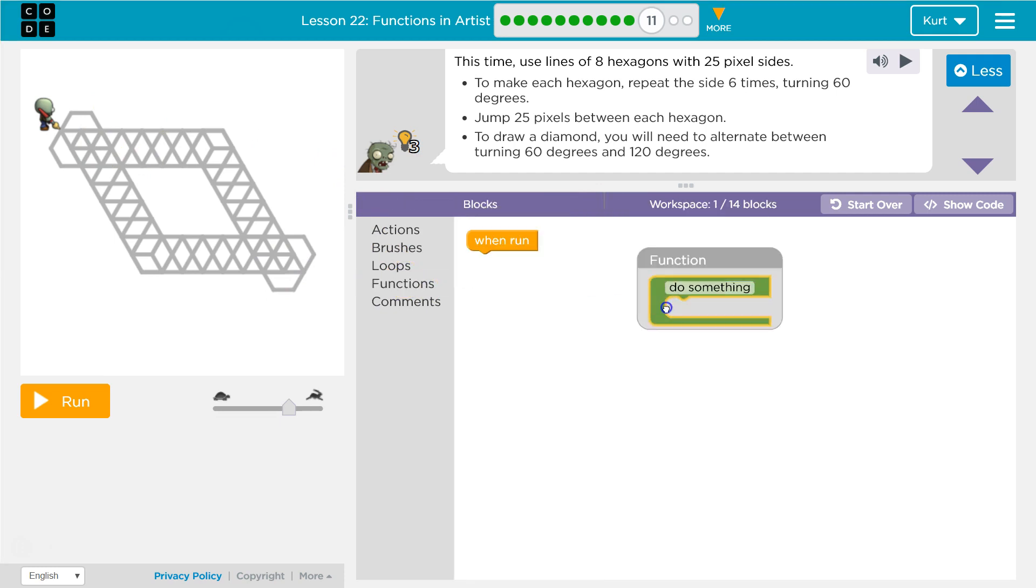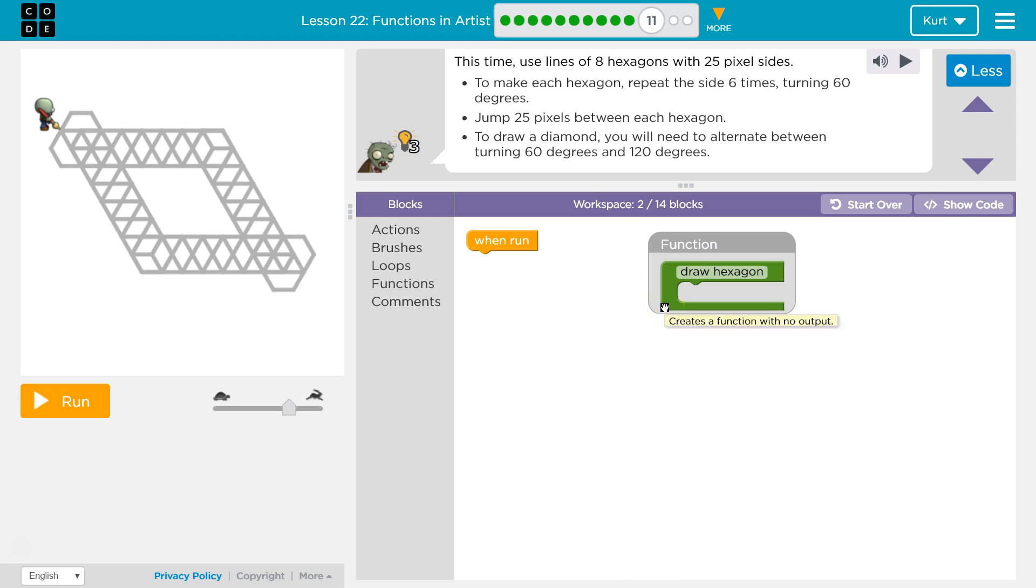Let's do a function like we have been doing except instead of draw a square or triangle we want to draw a hexagon. And what do we need to draw a hexagon? We're going to go forward. Well first wait a minute, six sides. So we want to draw this side six times.